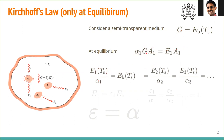So E1 divided by alpha-1 equals G, and G is nothing but Eb(T). Eb is a function of the surface temperature — that is the black-body emission. This expression E1/alpha-1 = Eb holds good for all the objects: E2/alpha-2, E3/alpha-3, and so on.